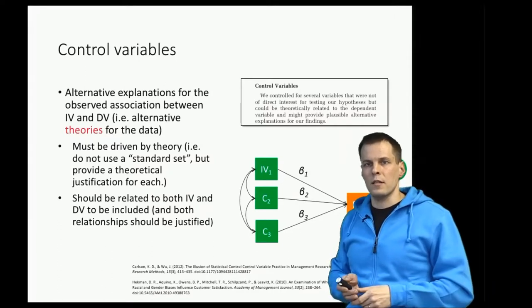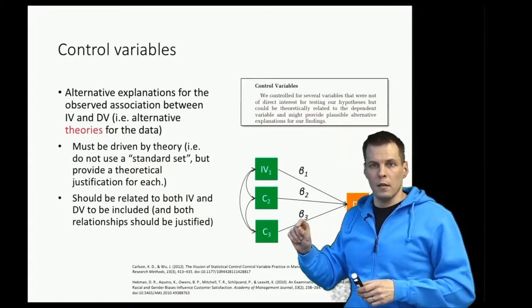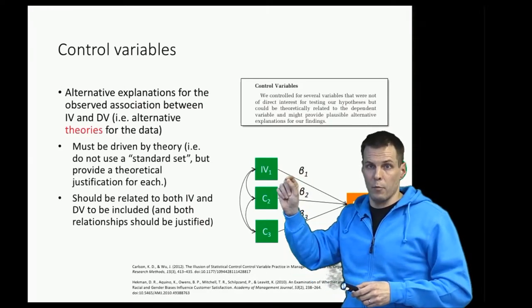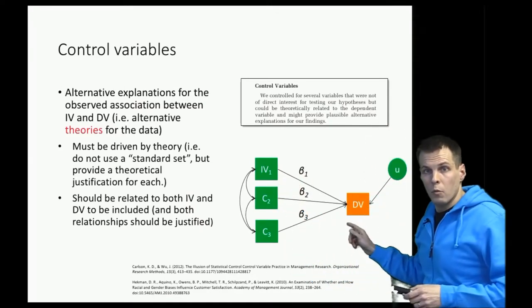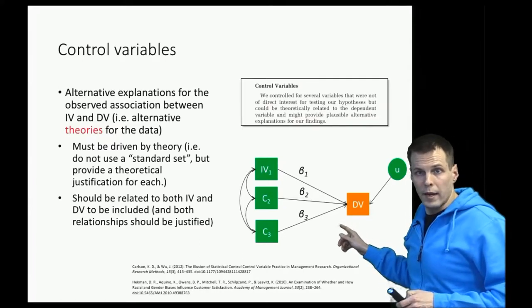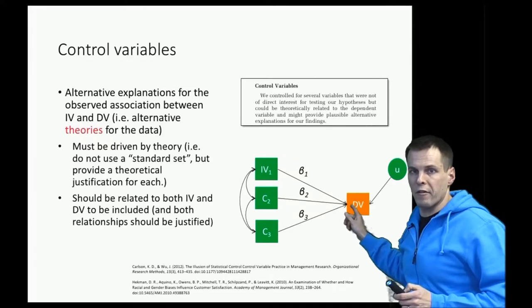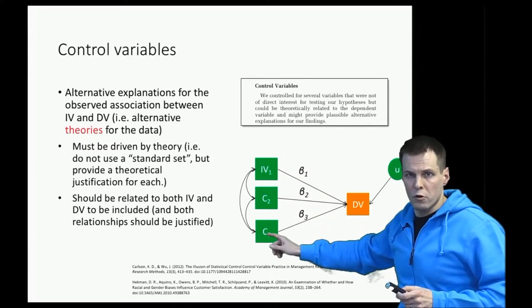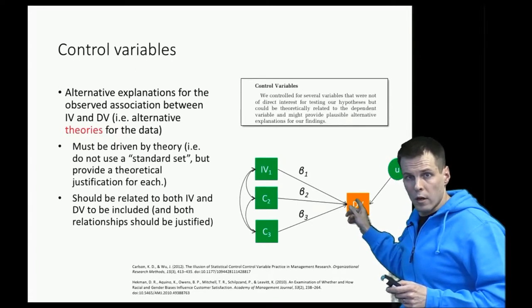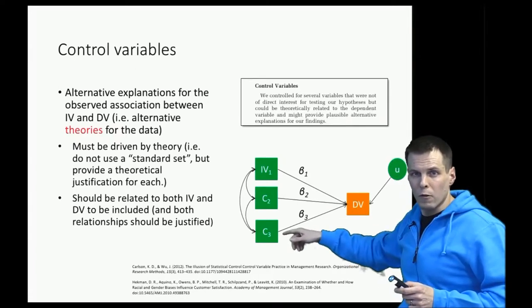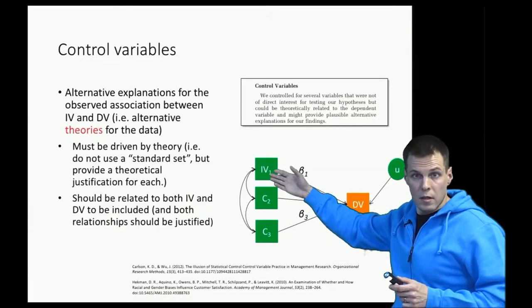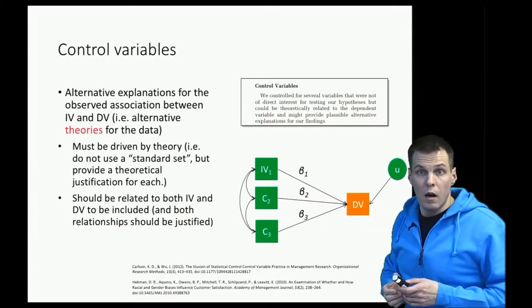It's important that control variables are selected based on theory, instead of just throwing in a standard set of variables. You need to choose them carefully to rule out alternative explanations, and it's important that you justify why you think that the control variable is related to both your independent variable and the dependent variable. One common issue I see as a reviewer is that authors generally only justify the relationship between the control and the dependent variable, but it's almost as important to justify why the control and the key independent variable — CEO gender in this case — are correlated.